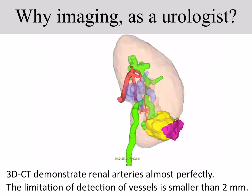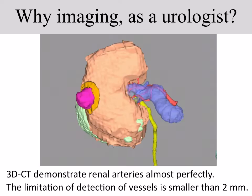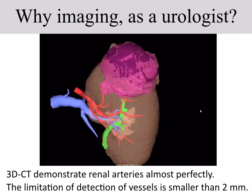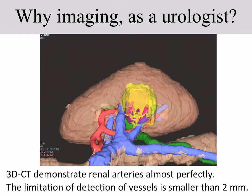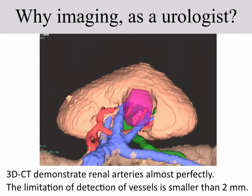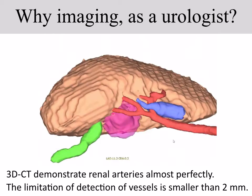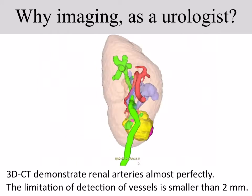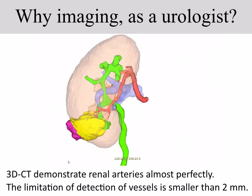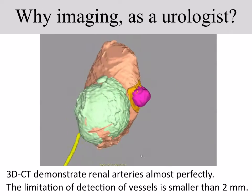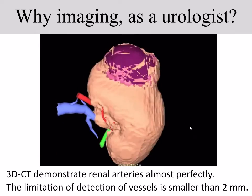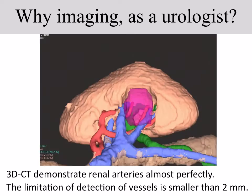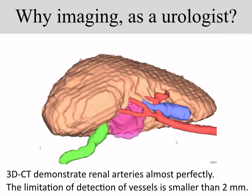For example, with thin slice contrast CT, renal arterial branches can be identified to at least the segmental level. The reported limitation of detection of vessels is smaller than 2 mm, so 3D CT demonstrates the location of main renal arteries almost perfectly. This information improves surgical confidence, surgical effectiveness, and patient safety.